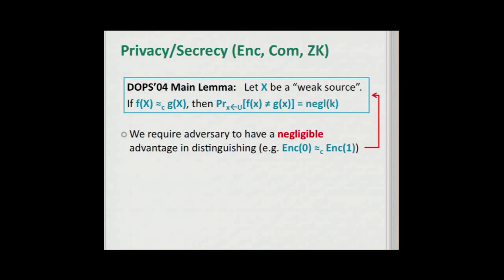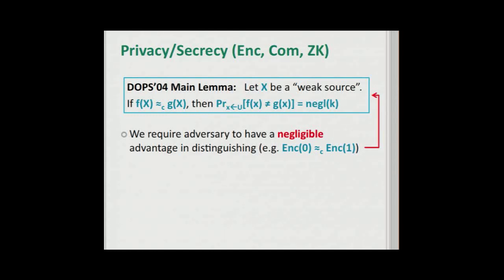So why does this lead to a very negative result? Well, in privacy applications we normally require the adversary to have negligible advantage in distinguishing distributions. For example, in the case of encryption, we require that encryptions of zero are indistinguishable from encryptions of one. If we plug this into the lemma, encryption of zero and encryption of one must agree on all but a negligible number of coins — and this just doesn't give us a useful encryption scheme.